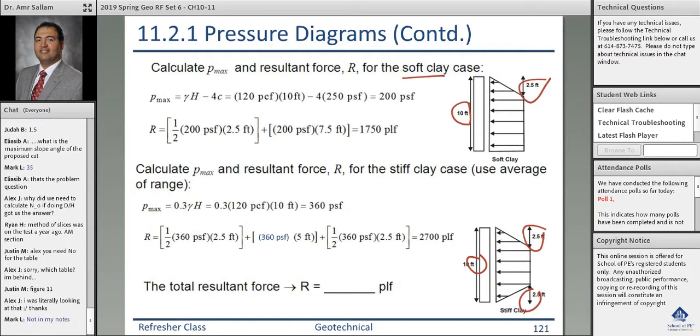The area - so the pressure is 200. The area of this whole thing is a triangle plus the rectangle, 1750 pound per foot. However, if this guy comes into the picture, then the rectangle...